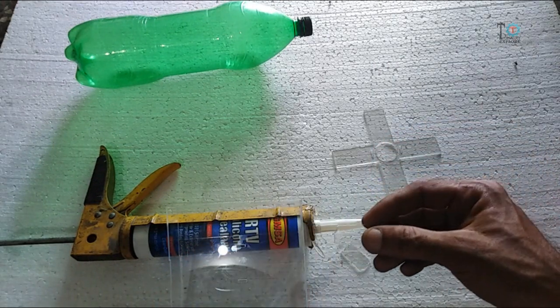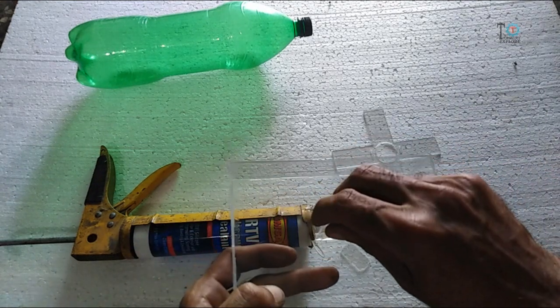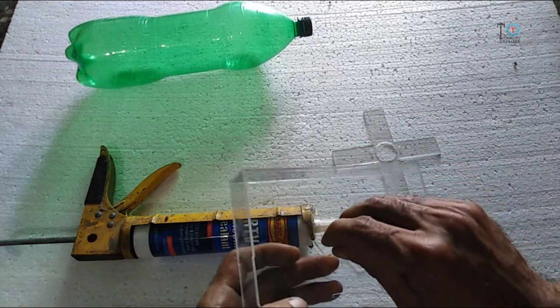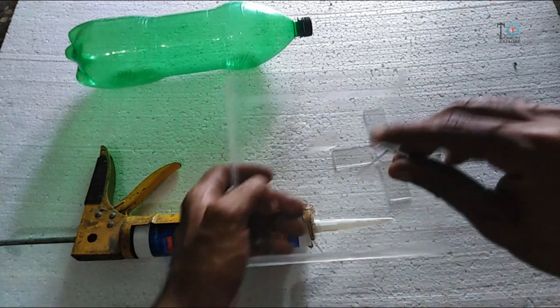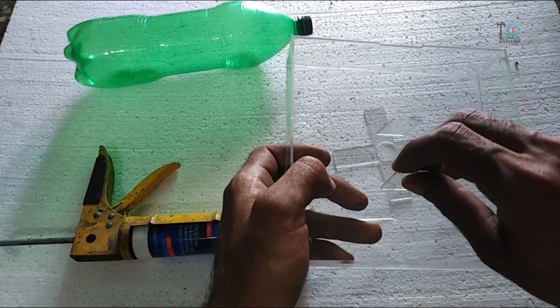After attaching all four walls on the base, now pour the permanent glue on this part and also attach it on the base like this. Same process for attaching the another part on the base.